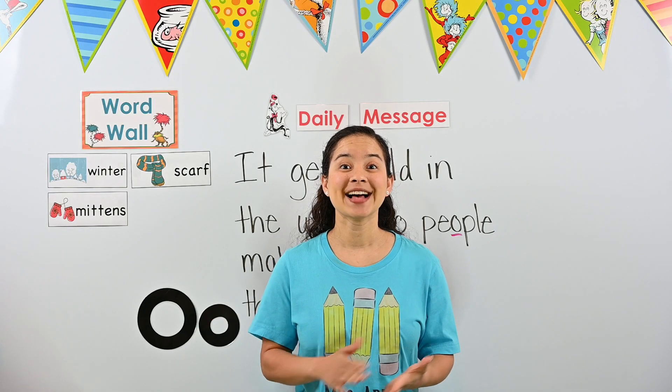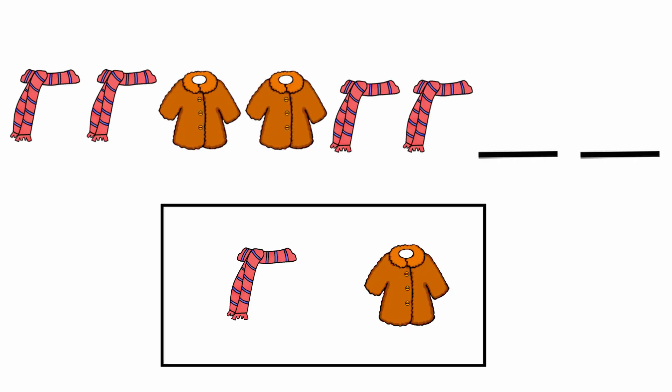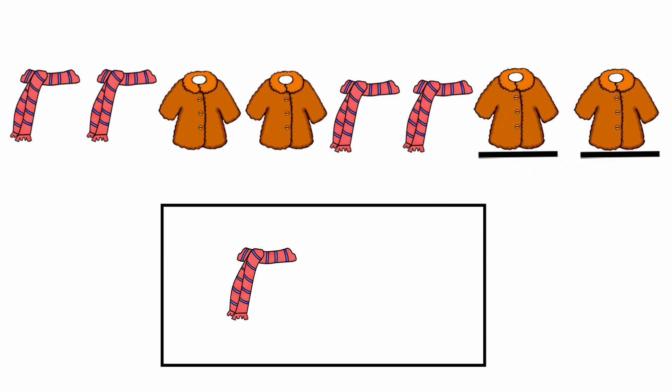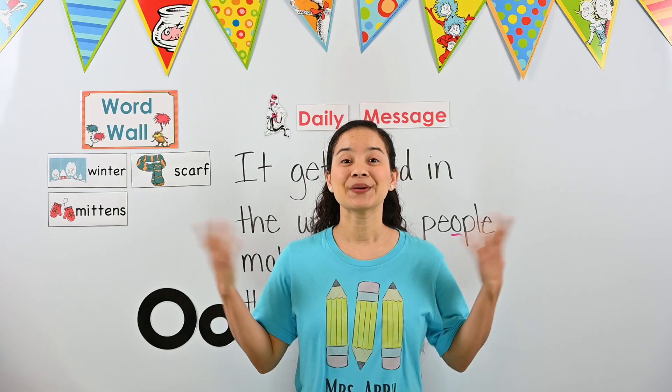Let's do one more pattern. I see a scarf, a scarf, a coat — a coat, another coat — then a scarf and a scarf. There are two more lines — what comes next? A coat and another coat. Our pattern is scarf, scarf, coat, coat — scarf, scarf, coat, coat. Great work, friends!